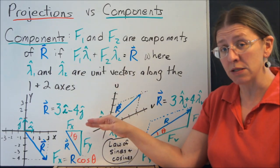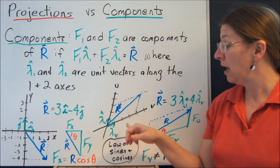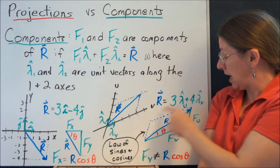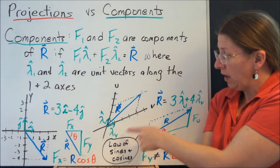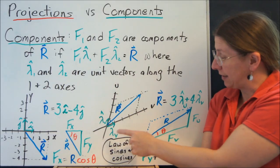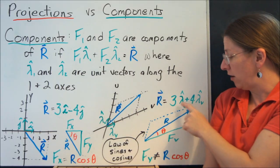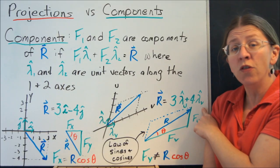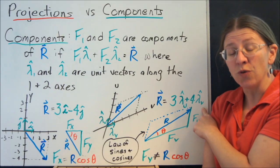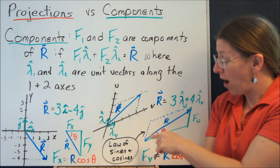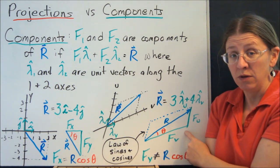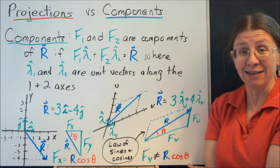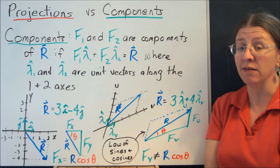The idea of the components still works, though, and these are called general force components. I can still measure some amount up the V axis, in this case 4, and some amount up the U axis, in this case 3, and I can say that R is 3 times the unit vector along U plus 4 times the unit vector along V. Those are the components along the U and V directions. Now, the problem is this triangle is not a right triangle. So when you're doing this, you cannot say F sub V is R cosine theta because it's not. You have to use the law of sines and cosines to actually find these components.